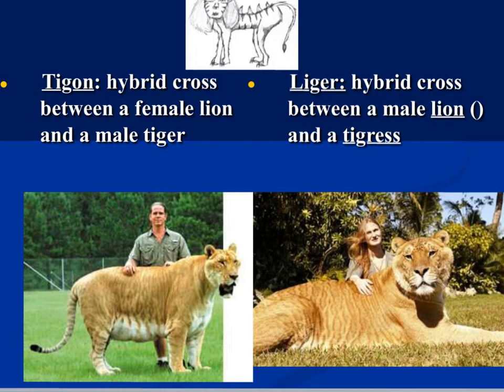Here are my first two examples of hybrids. On the left we have a tigon, and on the right we have a liger. Both of these are missing their growth inhibiting factor, so they grow much larger than a typical tiger or lion. As we look at hybrids, one thing to be aware of is how they're named — we put the father first, the mother second. In a tigon, the male is a tiger and the female is a lion. In a liger, the male is a lion and the female is a tiger. They grow much larger than their hybrid parents.